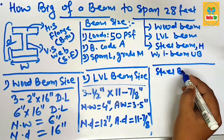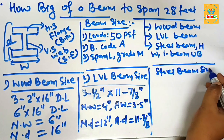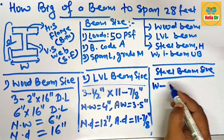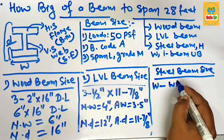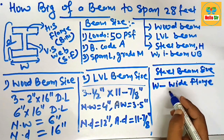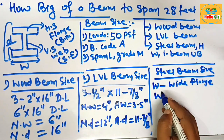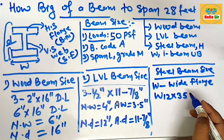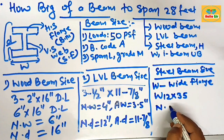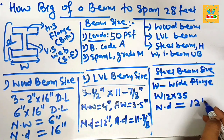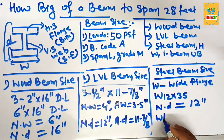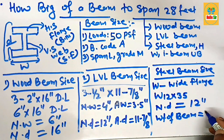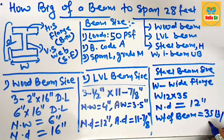The last one is the steel beam size required to span 28 feet. This is represented by the W beam, which is the American wide flange beam. You need about a W12x35 W beam for a 28-foot span. The nominal depth of the steel beam is 12 inches, and 35 is the weight of the steel beam in pounds per foot — that is about 35 pounds per foot. This is the steel beam size required to span 28 feet.